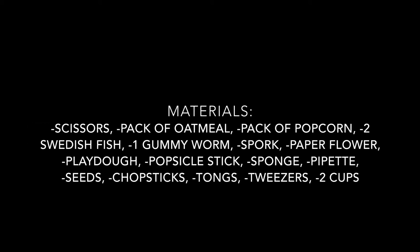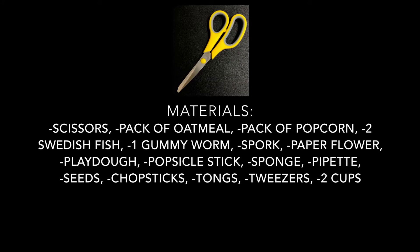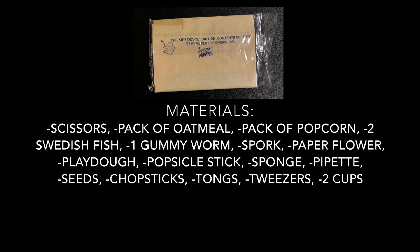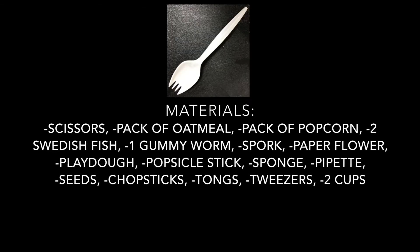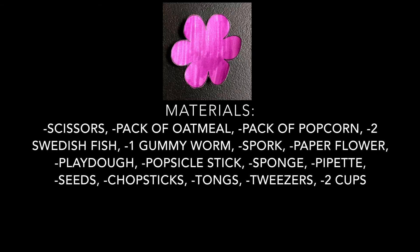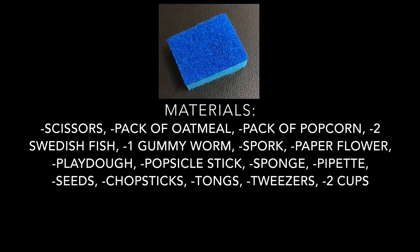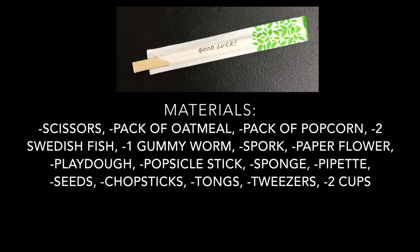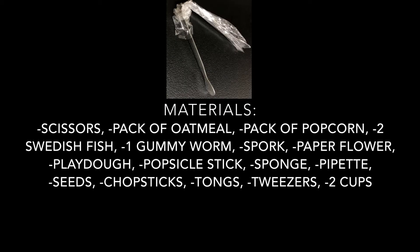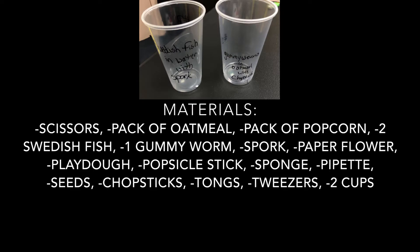For this activity you'll need all the following: a pair of scissors, a packet of oatmeal, a package of microwave popcorn, two Swedish fish and one gummy worm, a spork, a paper flower, some play-doh, a popsicle stick, a sponge, a pipette, some seeds, a pair of chopsticks, a pair of tongs, a pair of tweezers, and two cups that are already labeled for you.